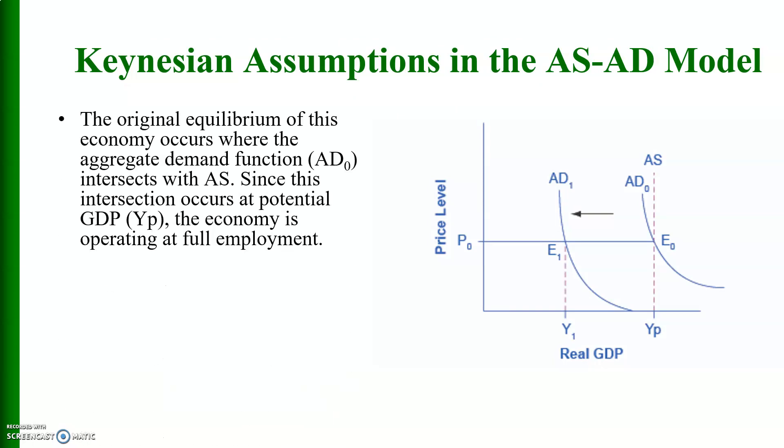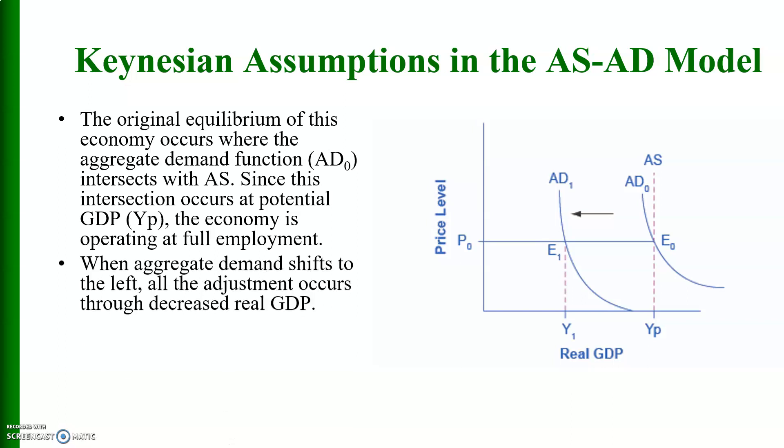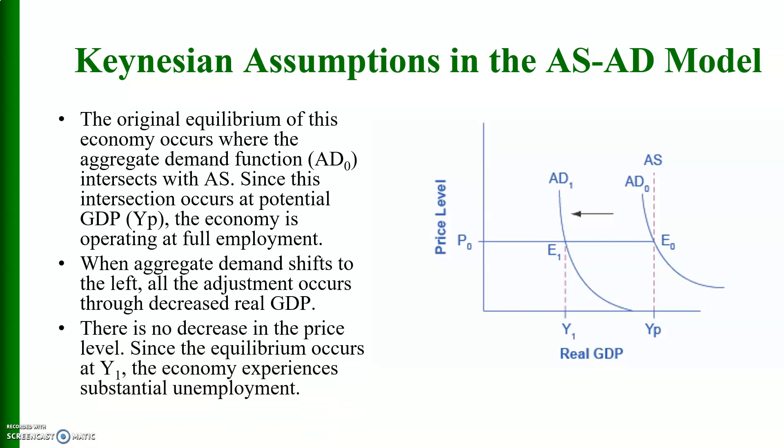In the aggregate supply–aggregate demand model, the original equilibrium occurs where the aggregate demand function AD0 intersects the aggregate supply. Since the intersection occurs at potential GDP (YP), the economy is operating at full employment. When aggregate demand shifts to the left, all the adjustment occurs through a decrease in real GDP — there is no decrease in the price level since equilibrium occurs at Y1. The economy experiences substantial unemployment.